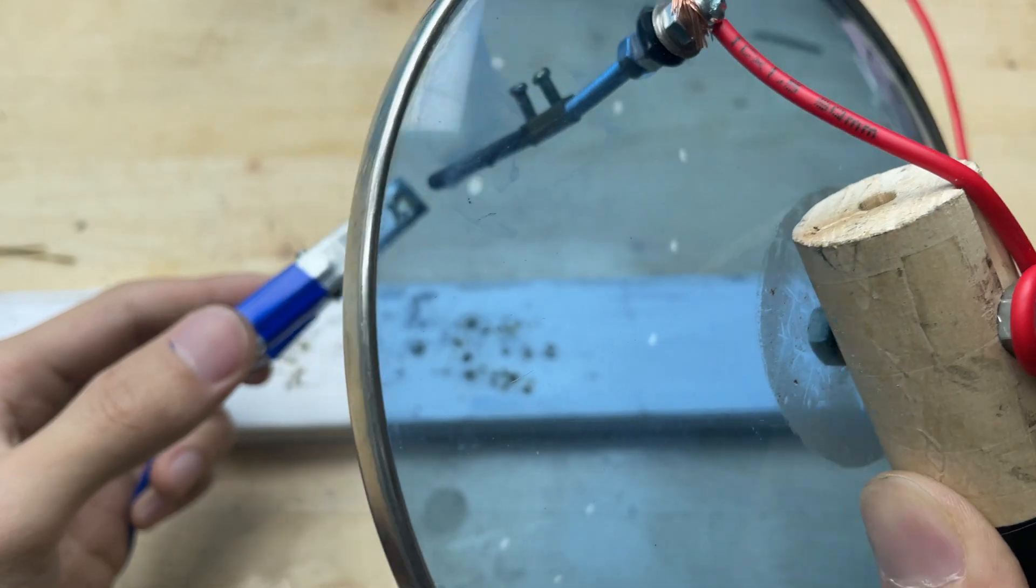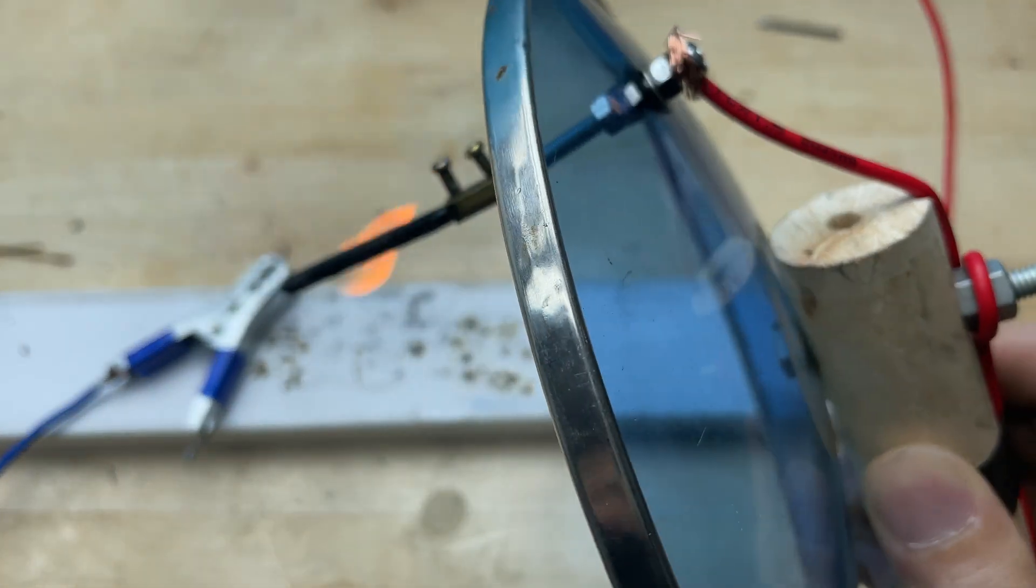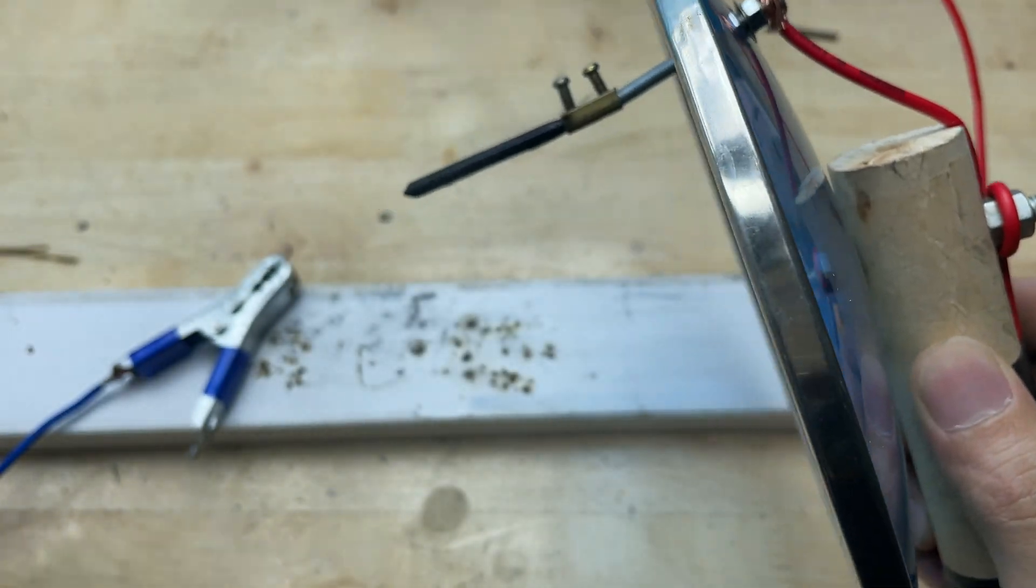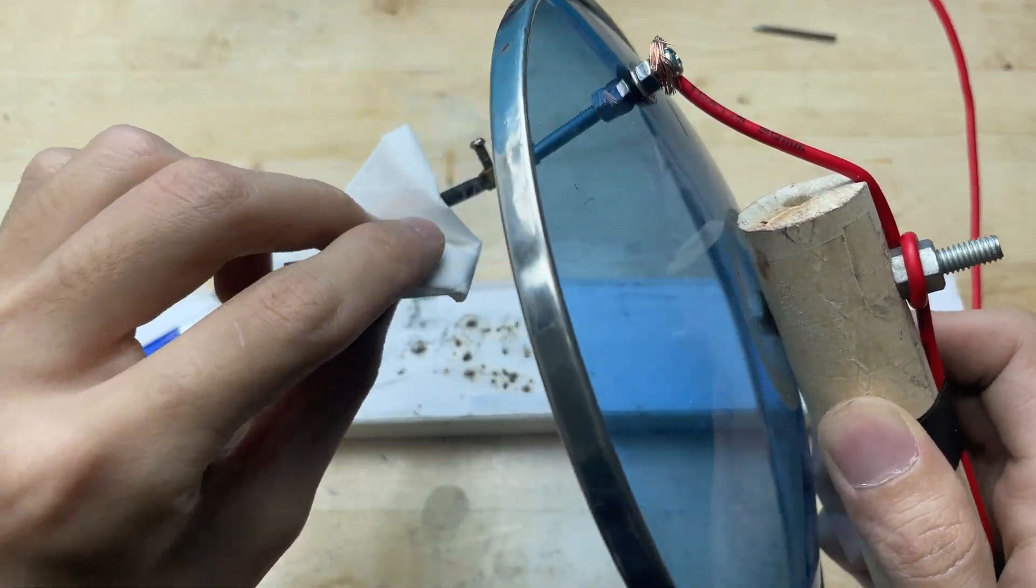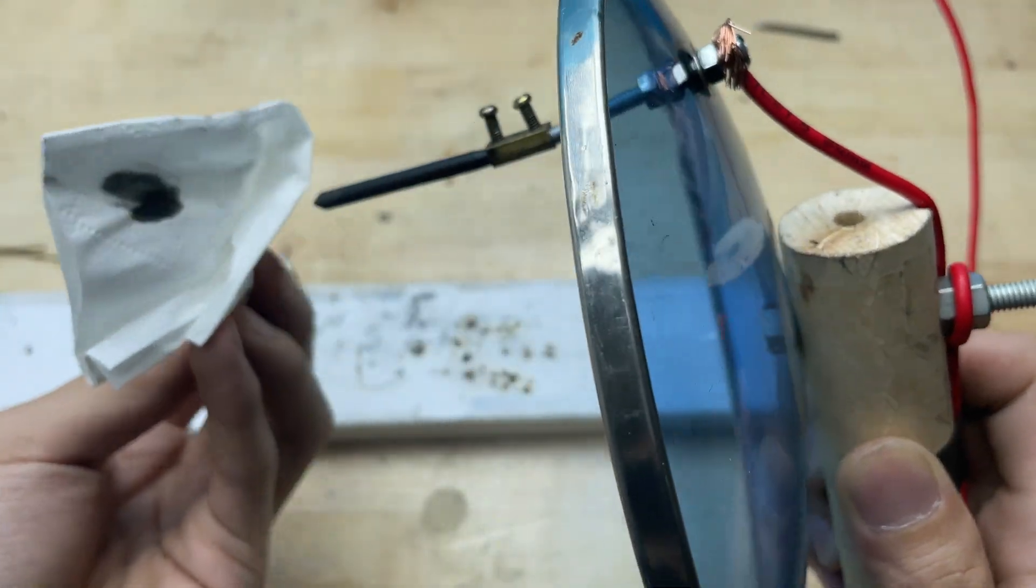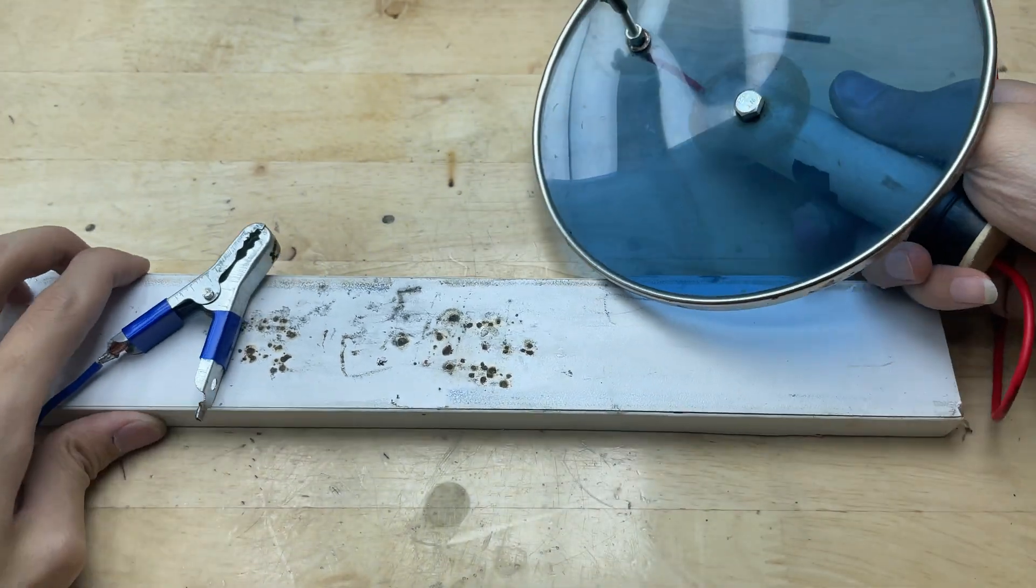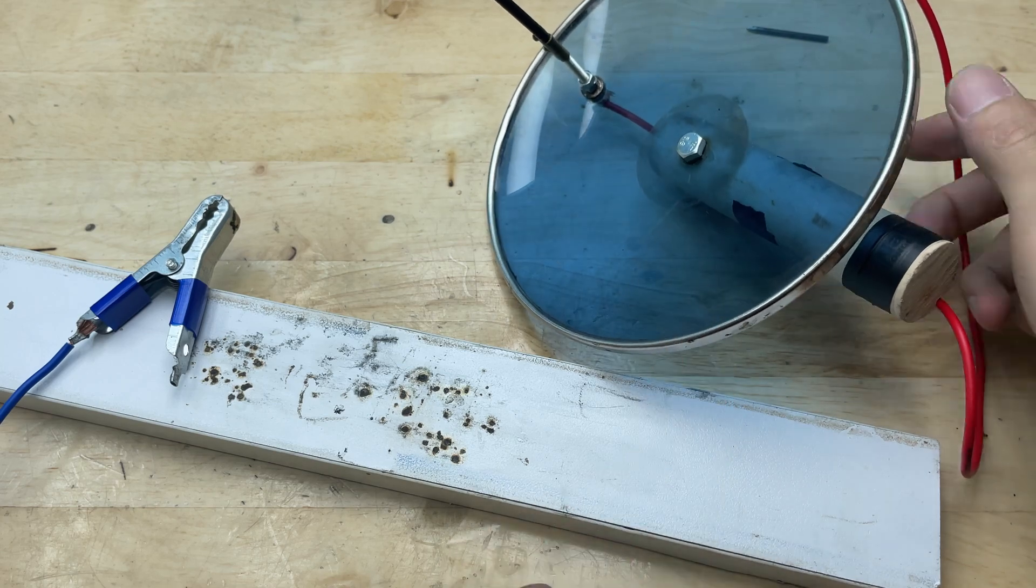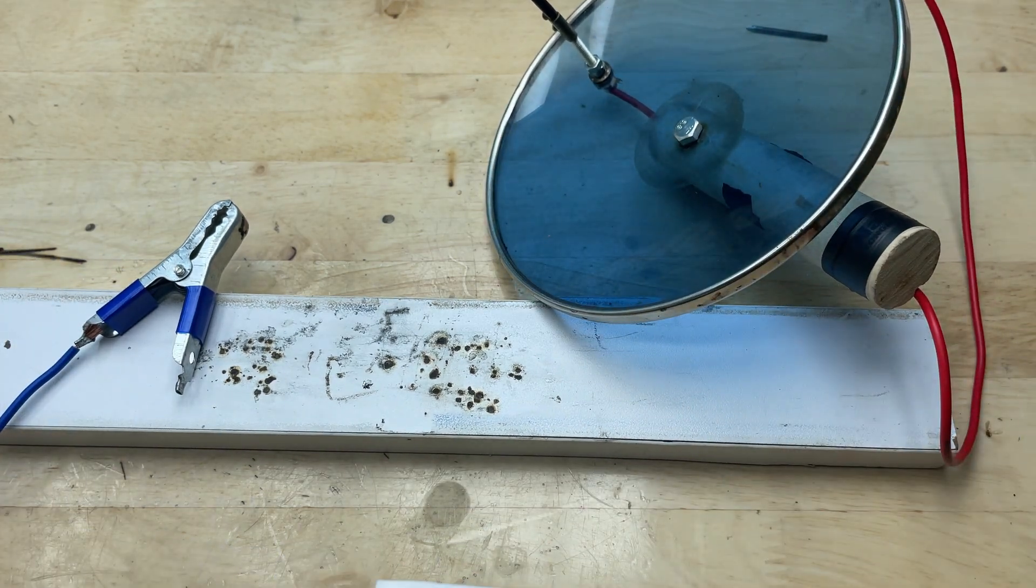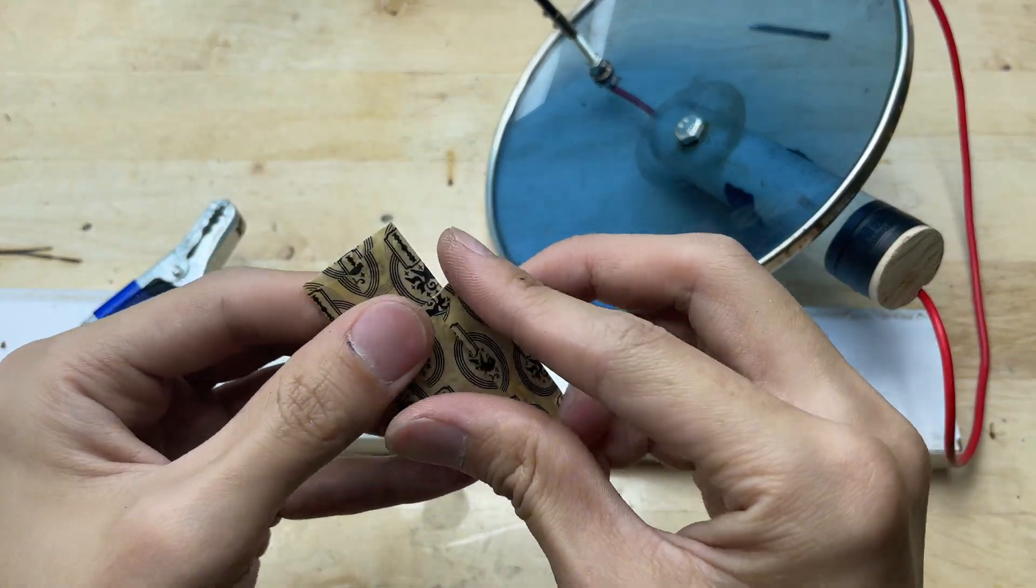Before welding, I'll preheat the soldering tip. Now, I'll test it with two razor blades.